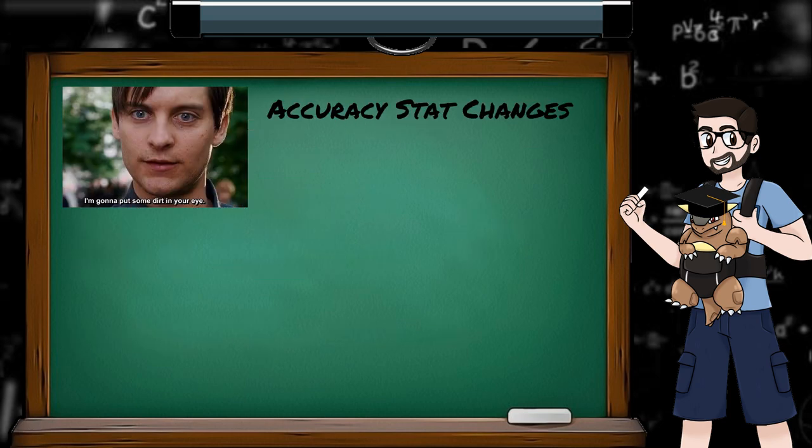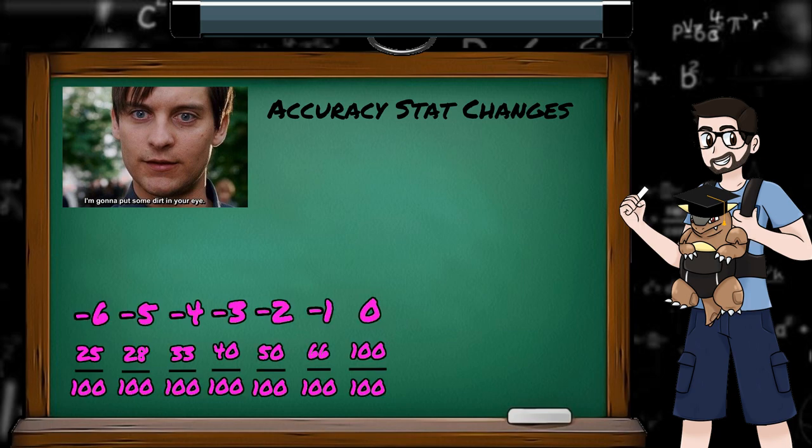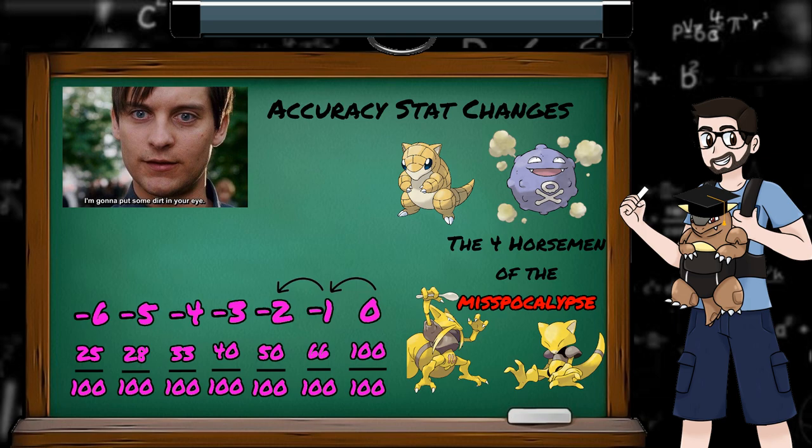Accuracy stat changes are another way our move's accuracy can be modified. Having a face full of smoke or sand will make it harder to land your attacks. Accuracy stat changes moves affect accuracy in the following way. Each time we are hit with a sand attack, smokescreen, kinesis, or flash, our accuracy stage decreases by 1, and the new accuracy modifier is applied to the accuracy equation.